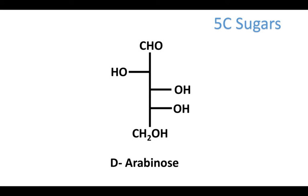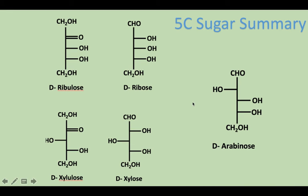D-Arabinose is kind of a loner — you have to remember it more on its own. The way I remember which OH group goes to the left-hand side is that arabinose starts with A, and therefore the first group on either left or right side is going to be the odd one out. So throw that one over to the left side and the other two are going to be paired up on the right. You'll notice it doesn't have a double bond, so it's going to have a CHO at the top and be an aldose sugar. Here's the summary for all the five carbon sugars — feel free to pause there and look over those trends.